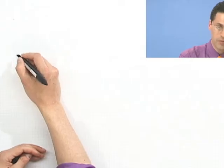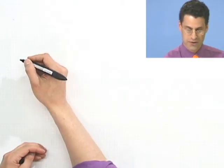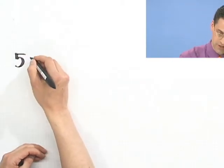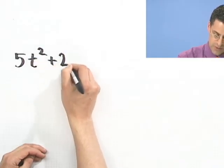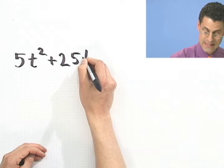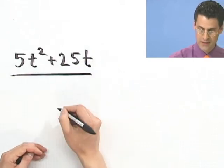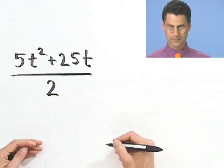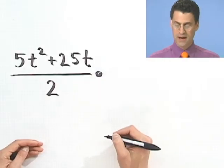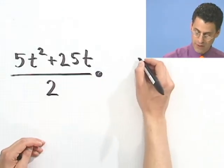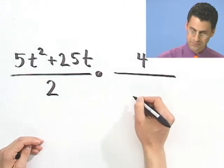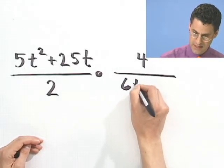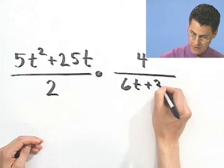Suppose I want to multiply the following two rational functions or rational expressions. 5t squared plus 25t, all divided by 2. And I want to multiply that by the following expression, 4, all divided by 6t plus 30.